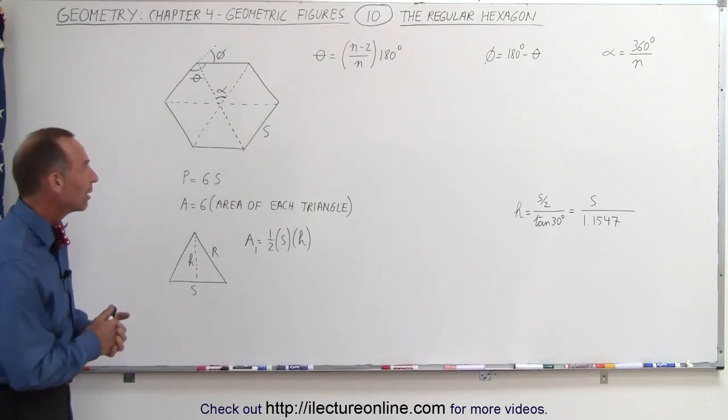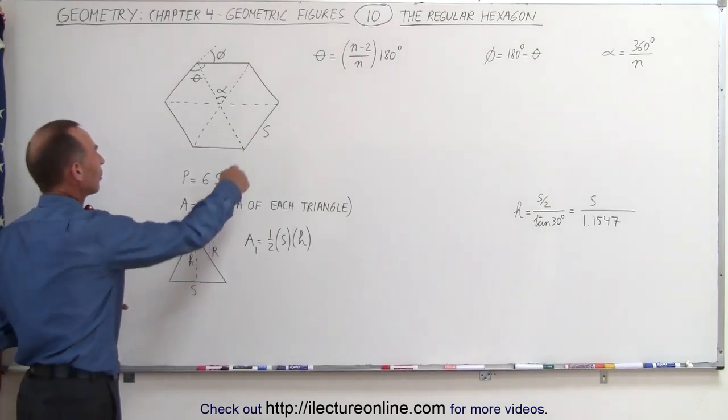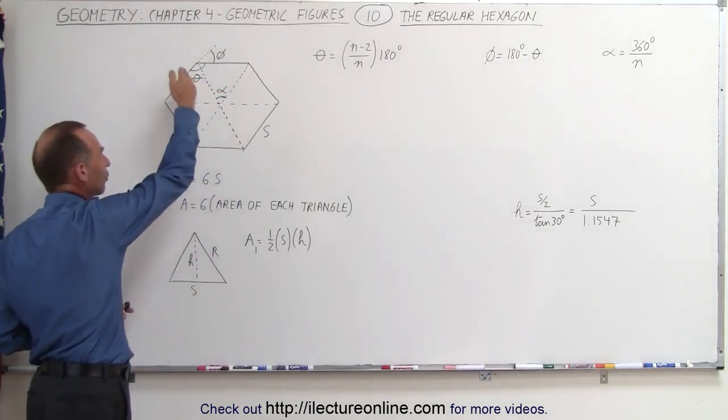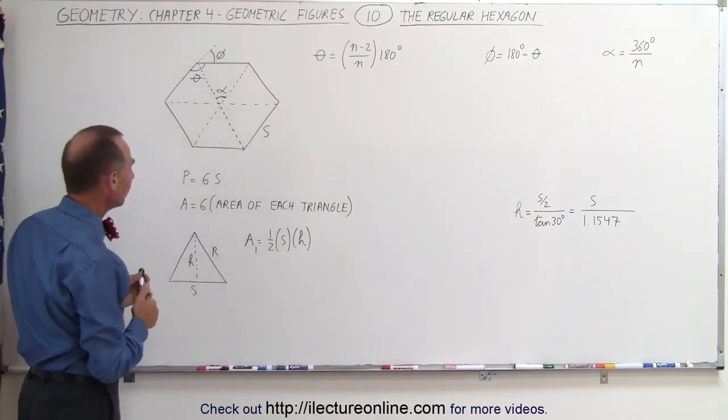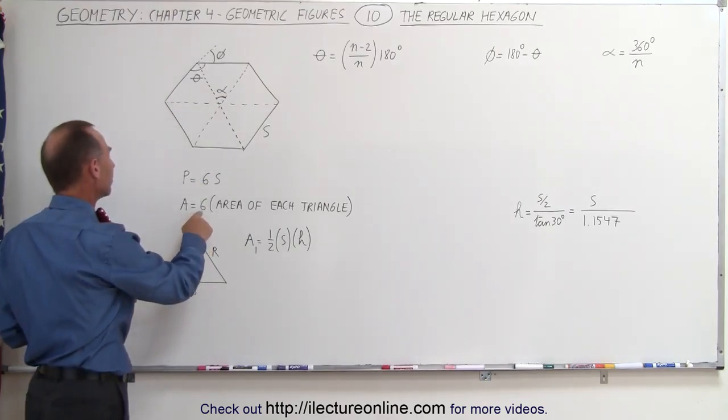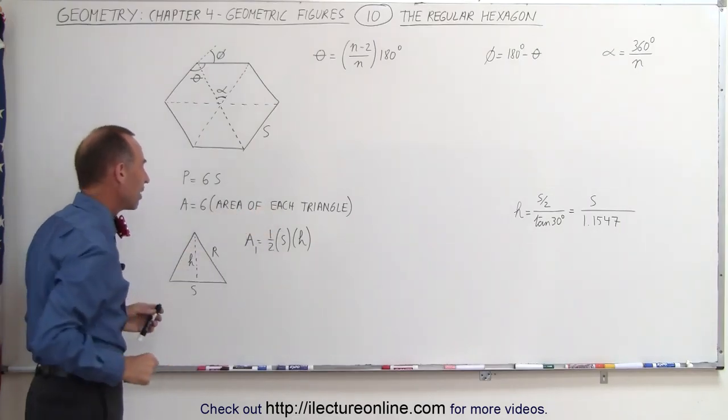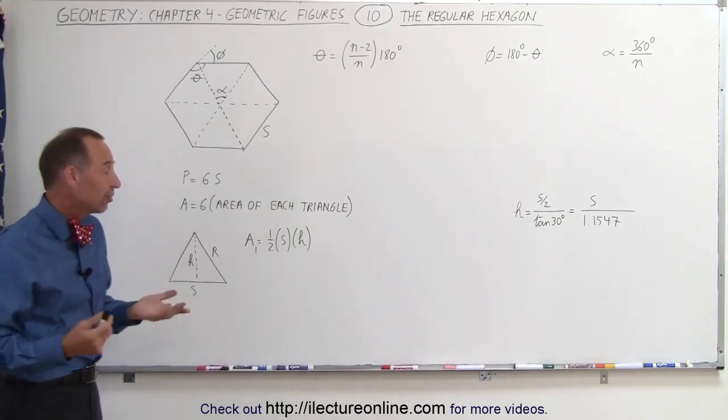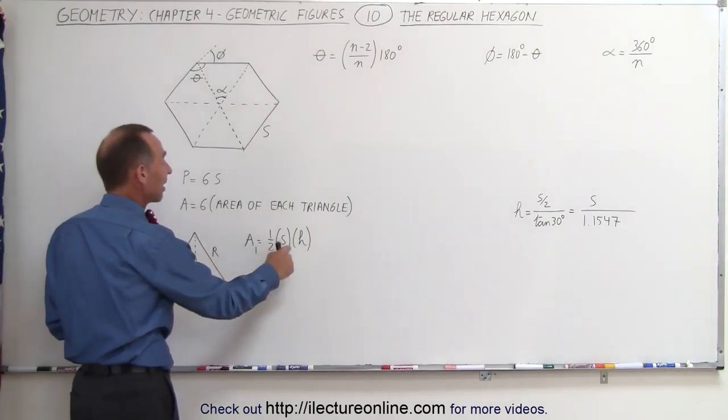We'll use the same technique as before. In this case, we're going to divide the hexagon into six similar triangles, and therefore the area will be equal to six times the area of each of the triangles. Of course, the area of each of the triangles will be one-half the base times the height.